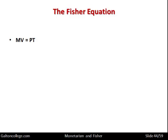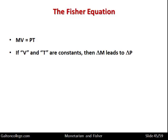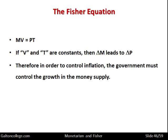We have MV equals PT. If V and T are constants, that means a change in M — delta M — leads to a change in P — delta P. Therefore, in order to control inflation, the government must control the growth of the money supply. Changes in P are caused by changes in M, so if the government controls the money supply, it will control inflation. That's how the Fisher equation suggests inflation can be dealt with.